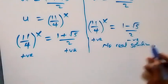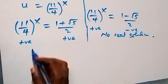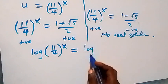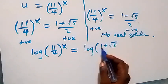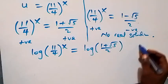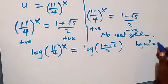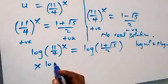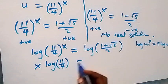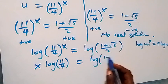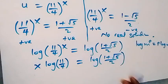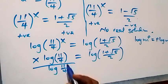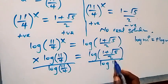Taking the log on both sides, we have log of 11 over 4 raised to power x equals log of 1 plus root 5 over 2. Applying the power rule of logarithms — log m raised to power p equals p times log m — x comes out front, giving x times log of 11 over 4 equals log of 1 plus root 5 over 2. Dividing both sides by log of 11 over 4, we isolate x.